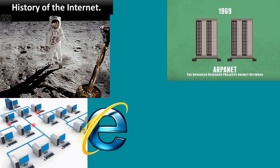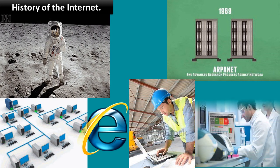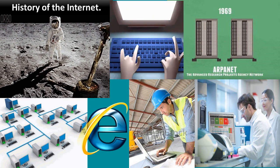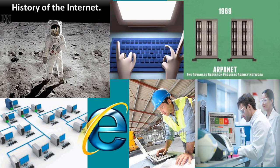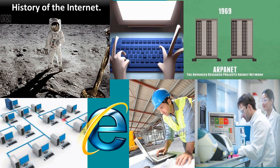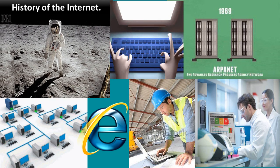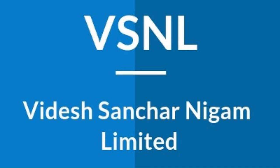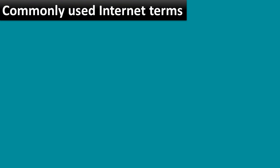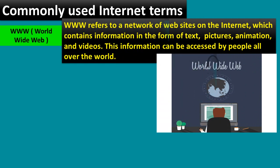Earlier, the internet was used by engineers, scientists, and computer experts for research purposes. But gradually the network was made accessible to private agencies and the general public. People started using it for sending messages and files between two computers. Did you know that in India, internet services started on 15th August 1995 through a government-owned company, VSNL — Videsh Sanchar Nigam Limited.